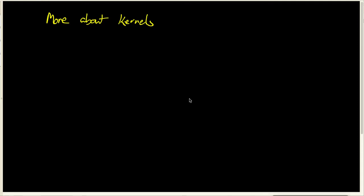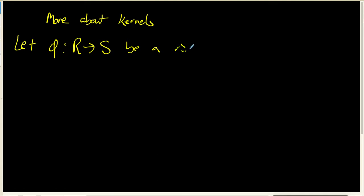In this video, we're going to look at kernels in some more detail. We first need to start with letting phi be a ring homomorphism from R to S. We don't know anything about the rings R and S — they may or may not be commutative, they may or may not have a multiplicative identity, one or both might have zero divisors, or one or both might be fields.